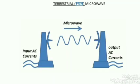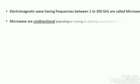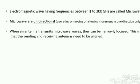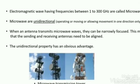The next type is microwave. Microwave signals are transmitted in a unidirectional manner. Microwave signals have frequencies between 1 to 300 GHz. They support the line of sight propagation method. Microwave signals are unidirectional, meaning the signals can move in only one direction. When an antenna transmits microwaves, they are narrowly focused, so the sending and receiving antennas must be aligned to receive a signal. The unidirectional property gives microwaves both advantages and sometimes disadvantages.